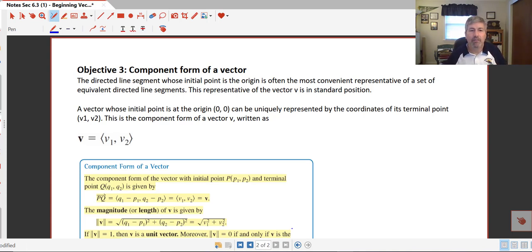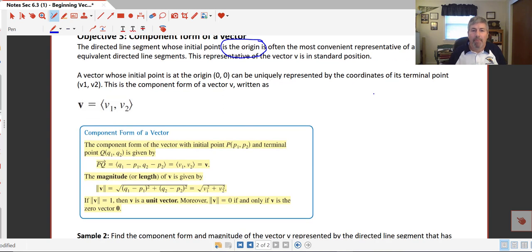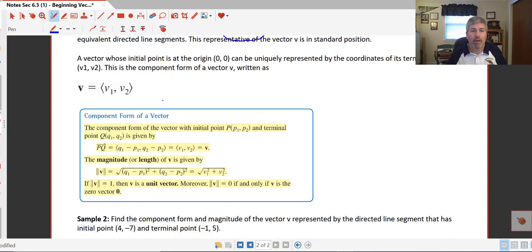And then our final objective here, the component form of a vector. The directed line segment whose initial point is the origin is often the most convenient. So we will work with the origin. It's the most convenient representative of a set of equivalent directed line segments. This representative of the vector V is in standard position. So we like our vectors to work from the origin. And so we have this vector V, and its component form is written as, almost looks like an ordered pair, V1, V2.